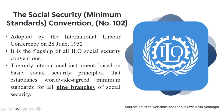The Social Security Minimum Standards Convention number 102 was adopted by the International Labour Conference on 28 June 1952. It is the flagship of all ILO social security conventions — the only international instrument based on basic social security principles that establishes worldwide agreed minimum standards for all nine branches of social security.